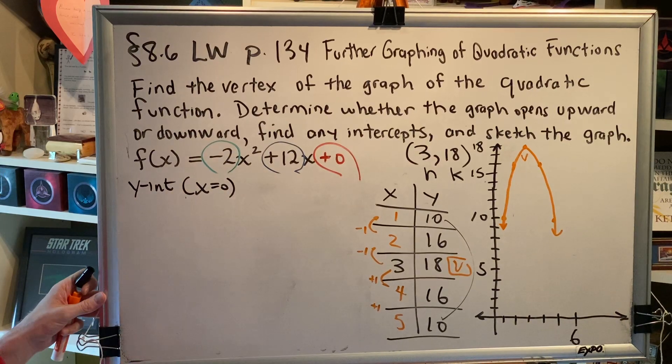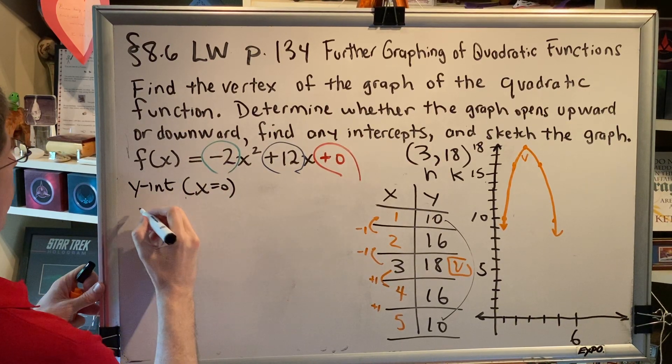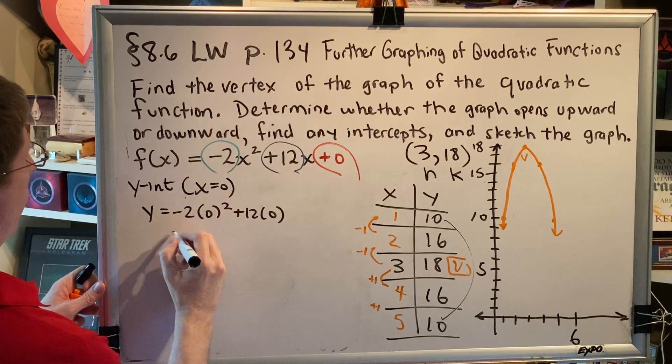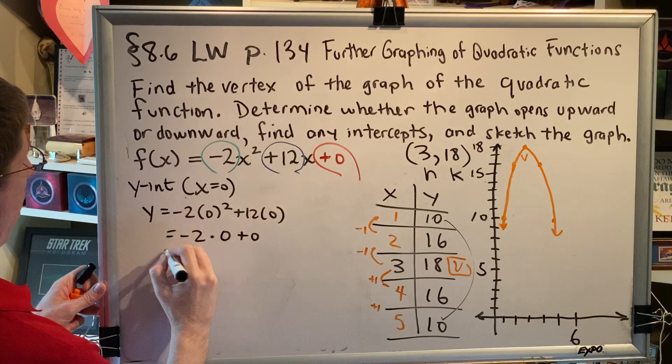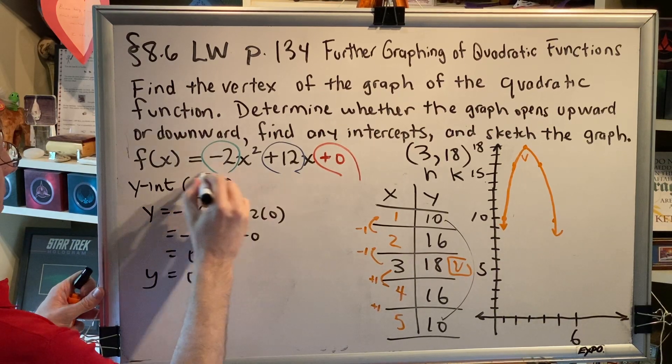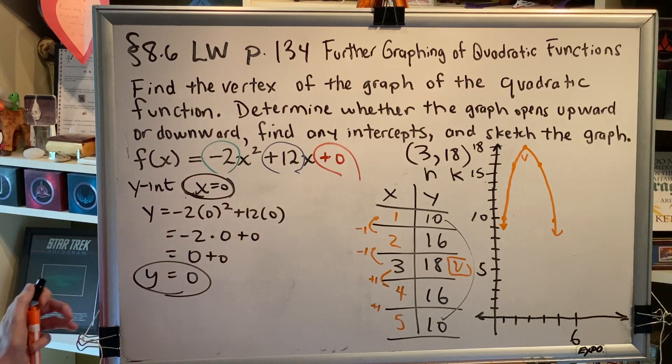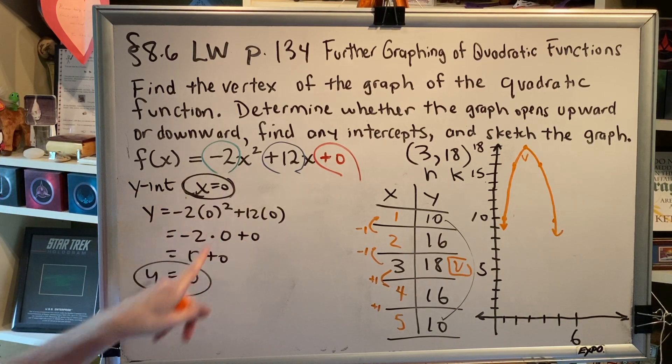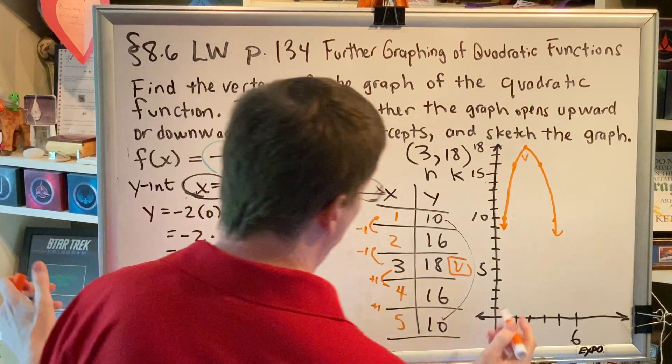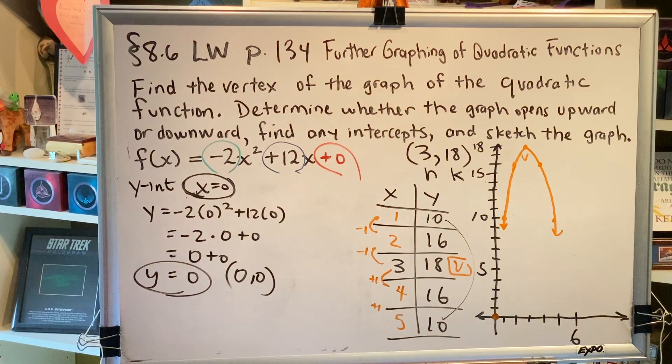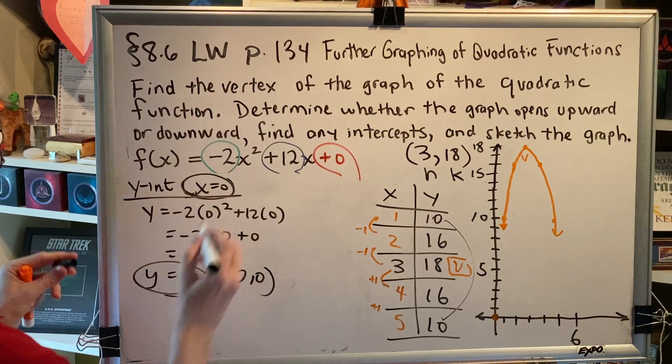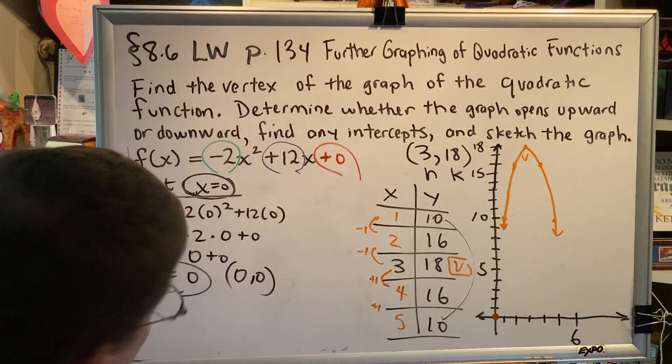Let's see if we can find both of those intercepts. Let's start with the y-intercept. We know that x equals 0. Replacing x with 0 in our equation, we get y = -2(0)² + 12(0). Negative 2 times 0 plus 0. 0 plus 0. 0. So when x equals 0, y equals 0. That gives us another point that we can put on our graph. (0, 0). So let's add a dot. The origin is one of the points on our graph. That was the y-intercept.